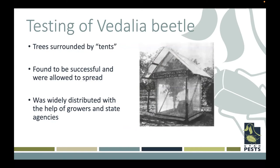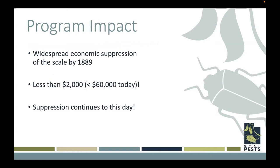They surrounded trees that had the cottony cushion scale with little tent structures and released Vedalia beetle inside these tents, finding that the beetle was controlling the scale. They then distributed this throughout their agricultural sites. With the help of growers and state agencies, they released this beetle and found widespread economic suppression of the cottony cushion scale by 1889. The total cost was less than $2,000, which is less than $60,000 today. And the Vedalia beetle is still helping to suppress cottony cushion scale to this day.